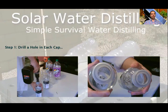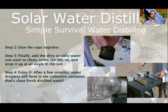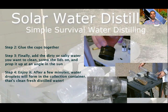Now let's see how you can do it yourself. First, remove the caps and drill a hole in each cap. Then glue the caps together. Finally, add the dirty or salty water you want to clean. Screw the lids on and prop it up at an angle into the sun. After a few minutes, water droplets will fall into the collection container — that's clean, fresh distilled water. Do not wait for liters, but for a drink it will be enough.